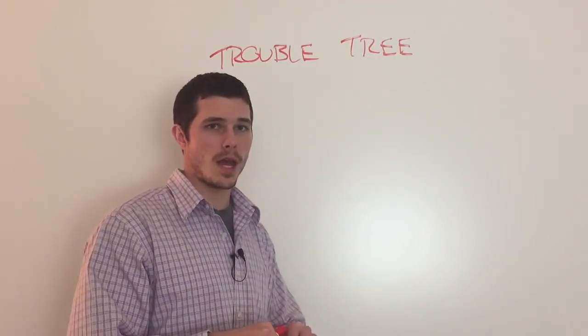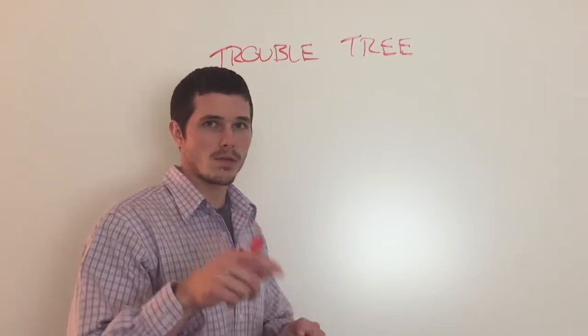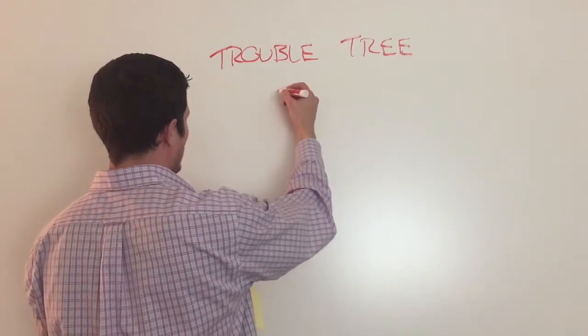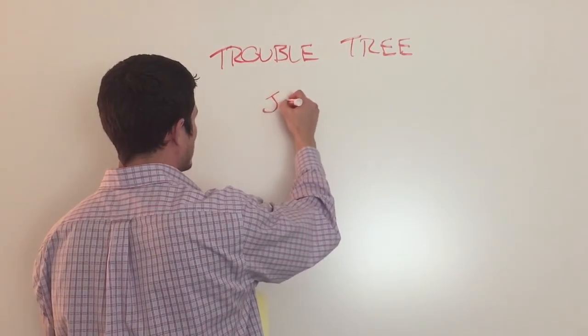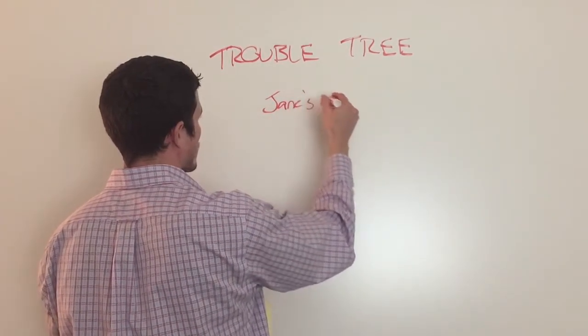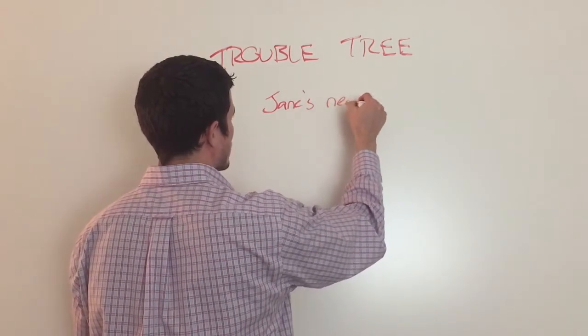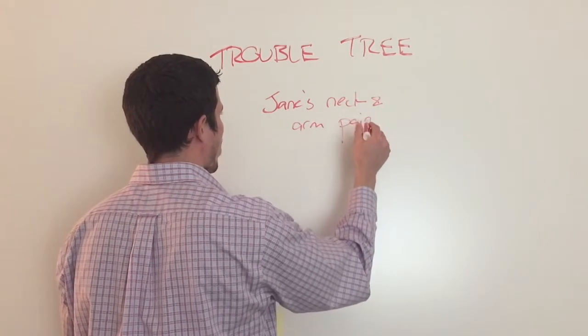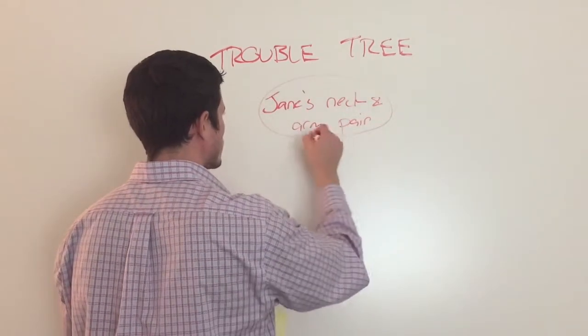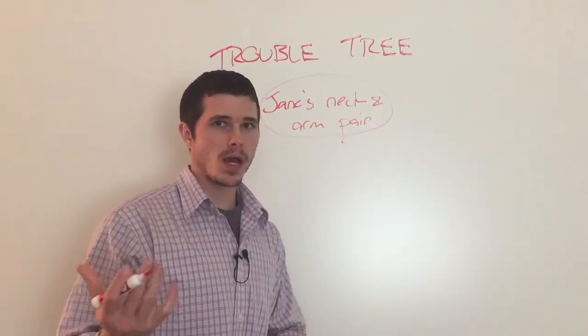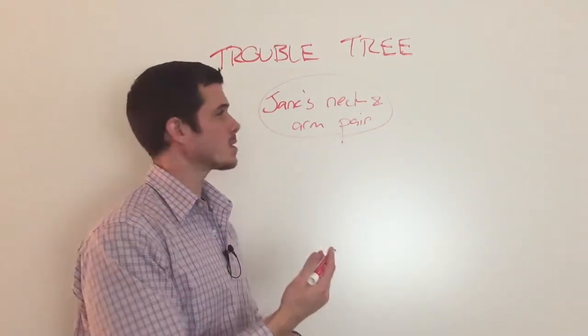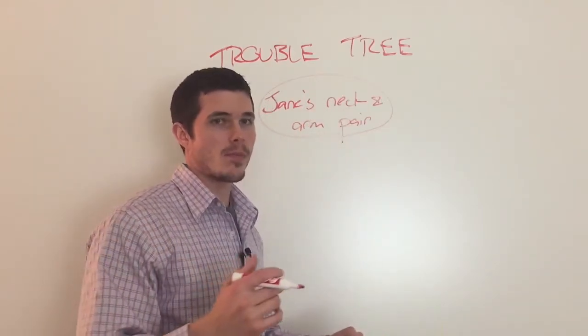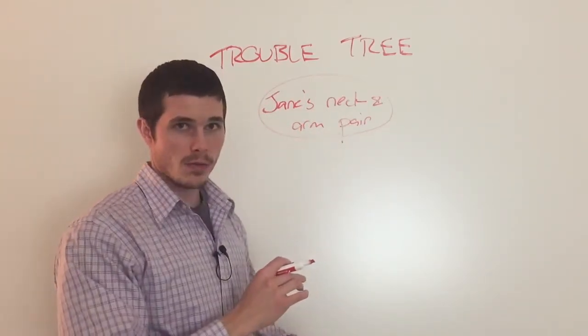Remember you're going to give this to them, the patient's name and neck and arm pain or so-and-so's name and shoulder pain. Kind of make them own it. Let them know that it's their pain and that ultimately through doing this, you're going to give them control. So here it is. So Trouble Tree and let's just say James neck and arm pain. As in any mind map, you're going to have a main topic.